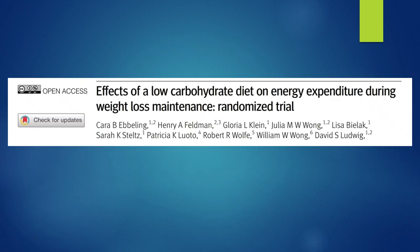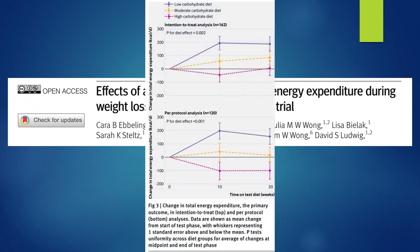A randomized controlled trial actually showed this — the effect of a low-carbohydrate diet on energy expenditure during maintenance of weight loss. This was a 2018, 20-week study. In subjects given a low-carbohydrate, high-fat, multi-saturated fat diet, their energy expenditures went up, compared to the low-fat and high-carbohydrate diet groups, whose energy expenditures went down.